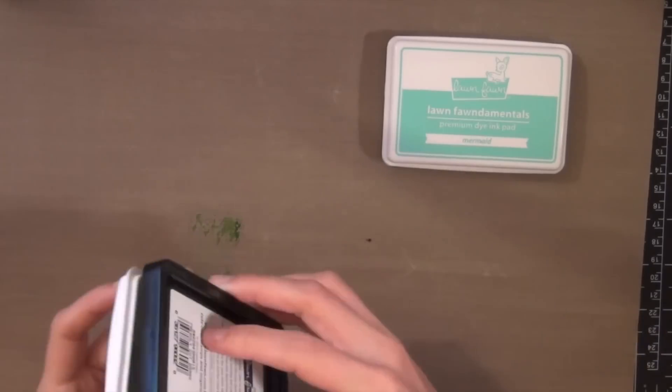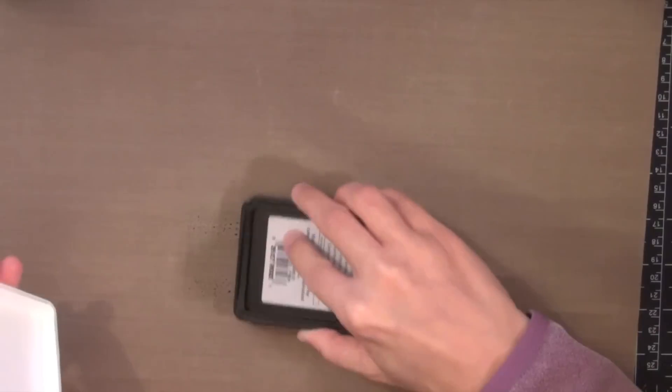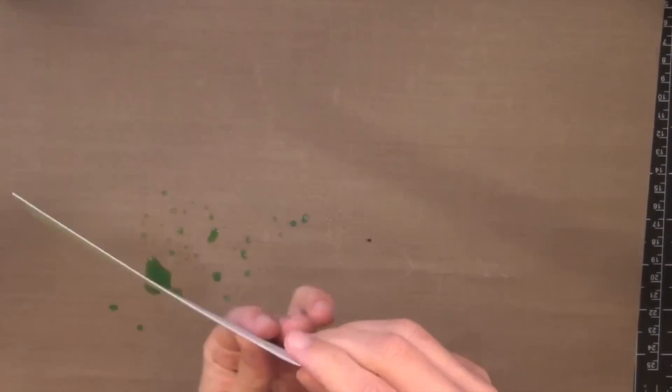So I'm going to start here by making my background. I'm spreading some green ink and then some blue ink on a craft mat. I'm going to spritz it with water and then I have a piece of watercolor paper.